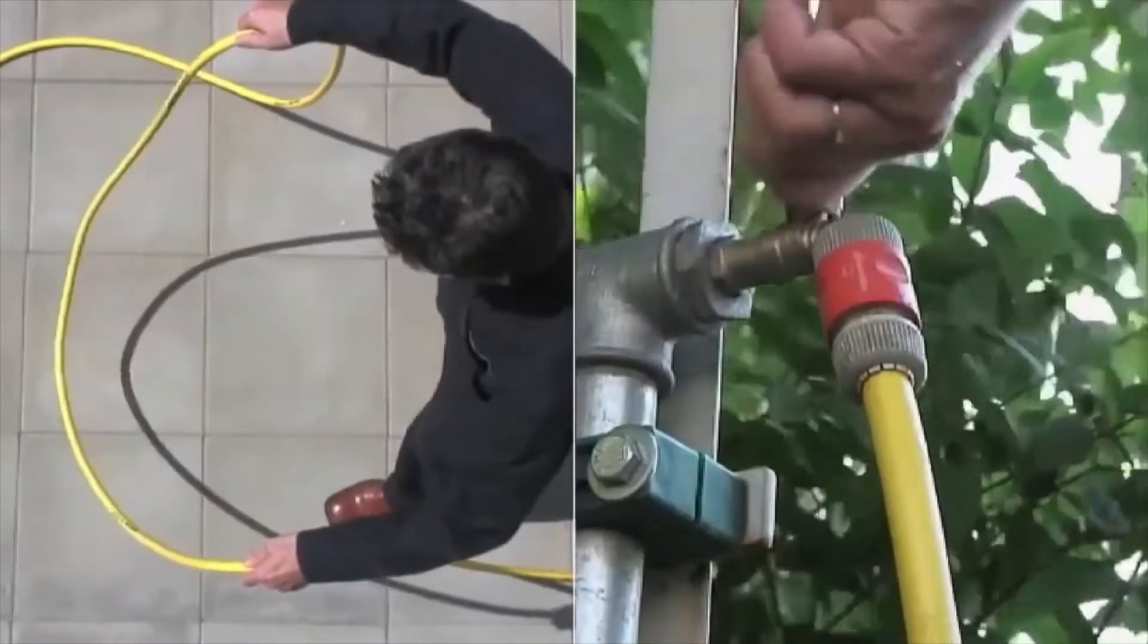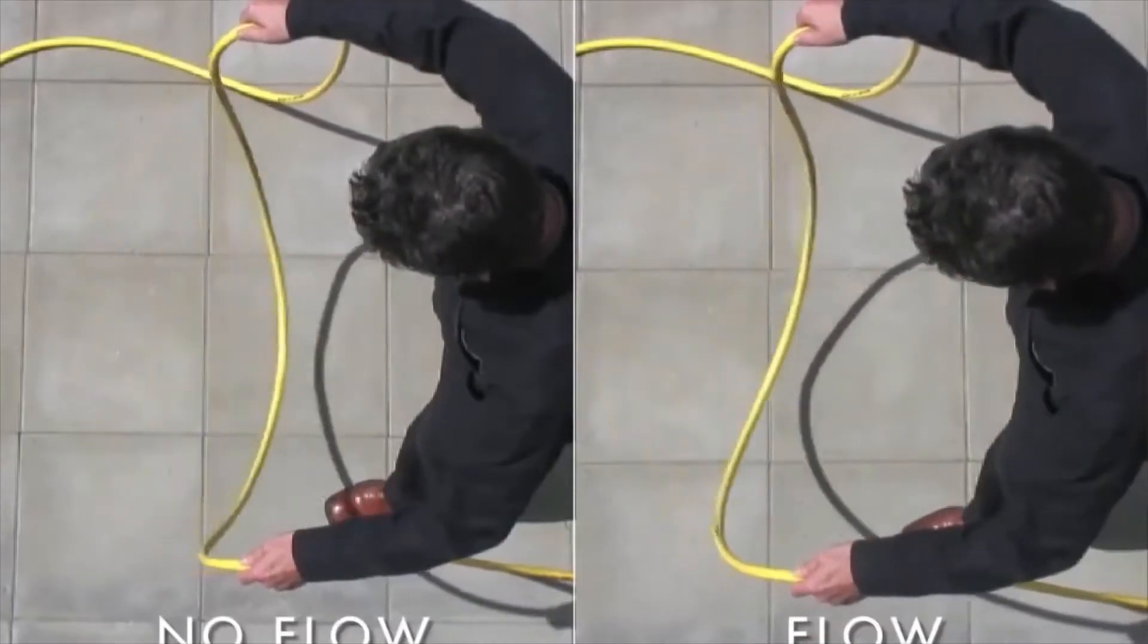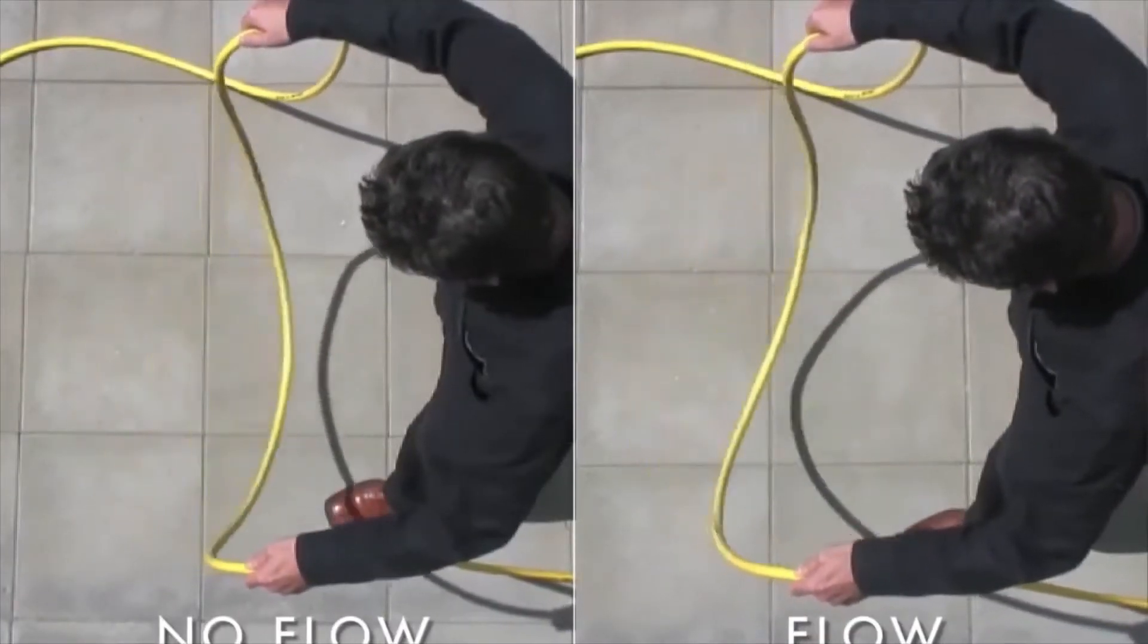But when a water flow is turned on, the water is forced through the swinging hose. The hose twists as a result of the changing angular velocity in the curved hose.